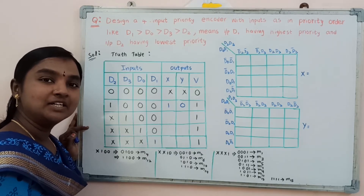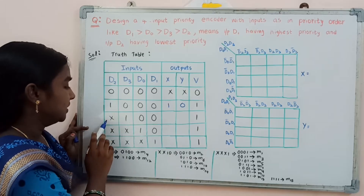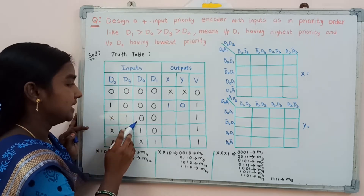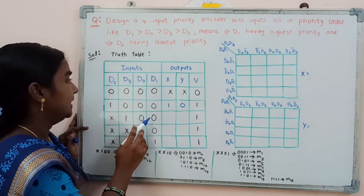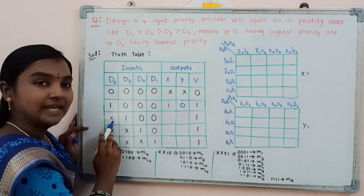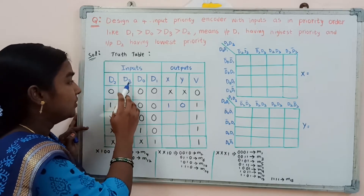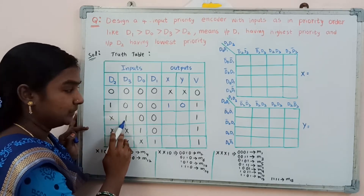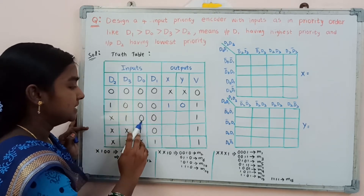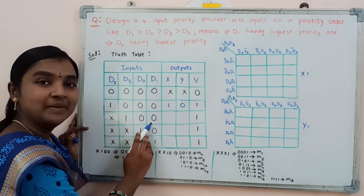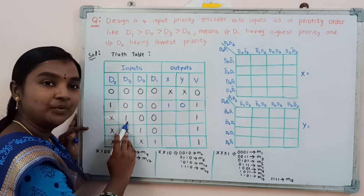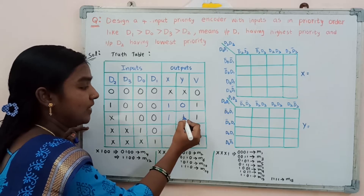Now considering the next combination: d2 is don't care, d3 is 1, d0 is 0, d1 is 0. Since d2 has the lowest priority, whether it is 1 or 0 we give priority to d3 over d2. Since d0 and d1 are both 0, we consider the binary code of d3, which is 1, 1.